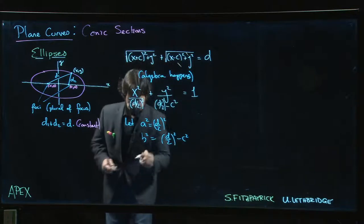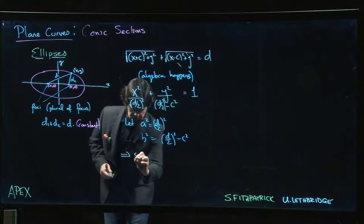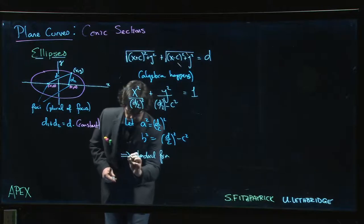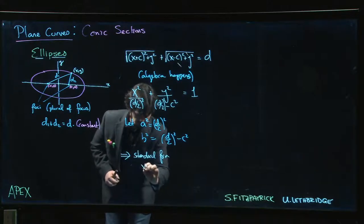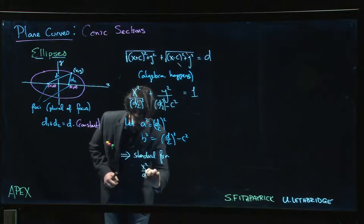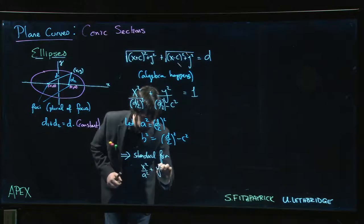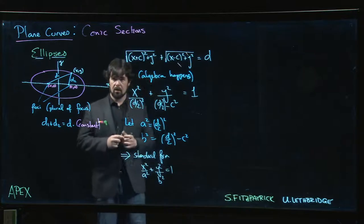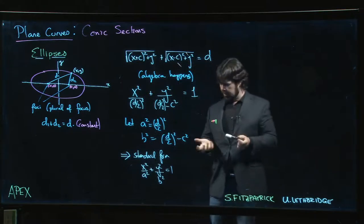And if we do that, we get the standard form: x²/a² + y²/b² = 1. This is your standard form for an ellipse.